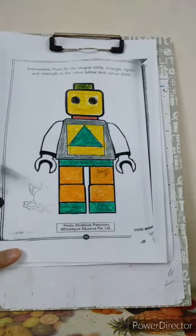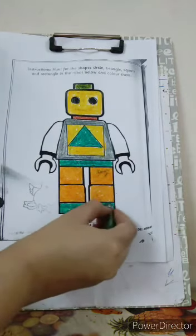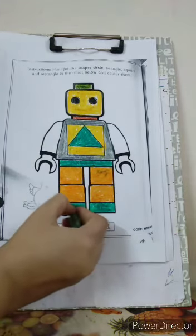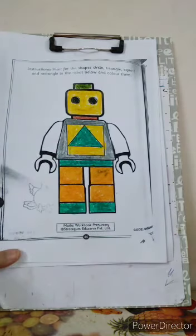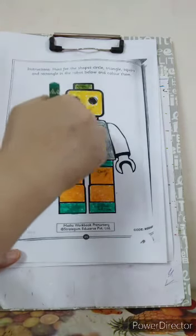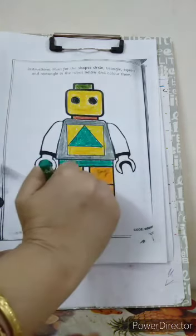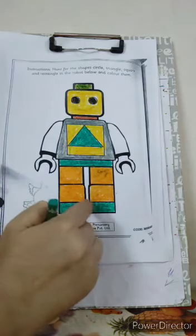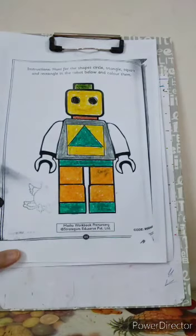We have colored the shapes in different, different colors. You can take your favorite color also. So what we have done? We have hunted for the shapes. Which shapes? Circles, triangles, squares and rectangles. Thank you.